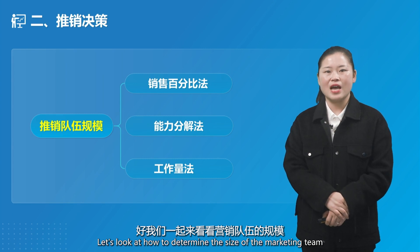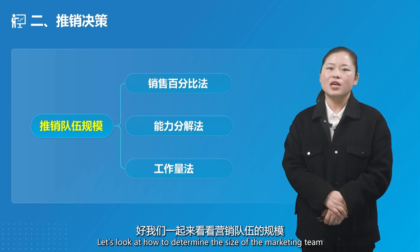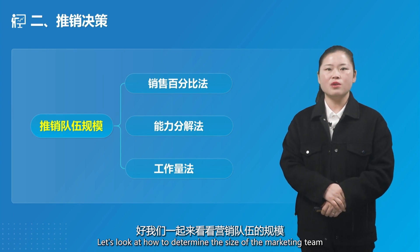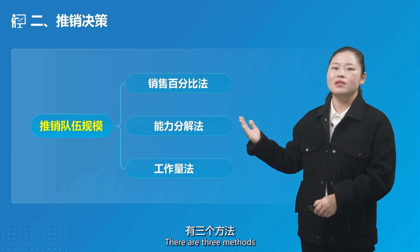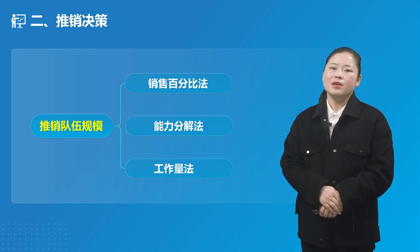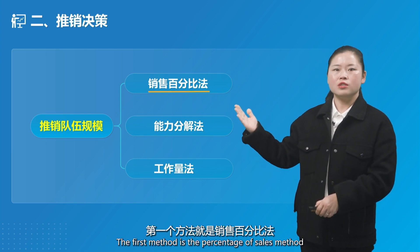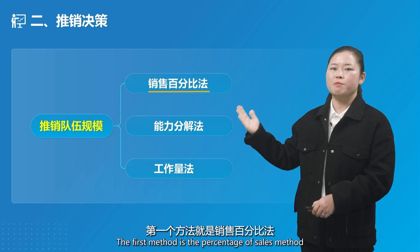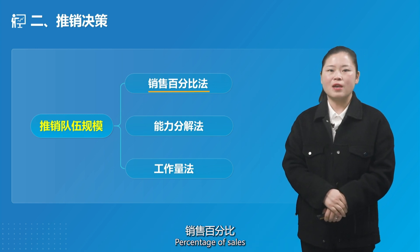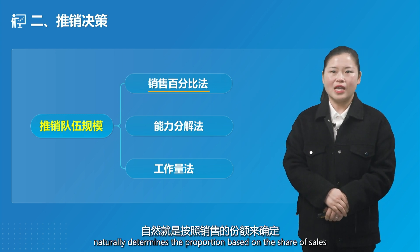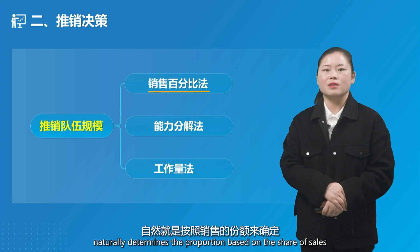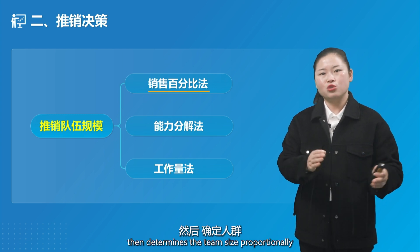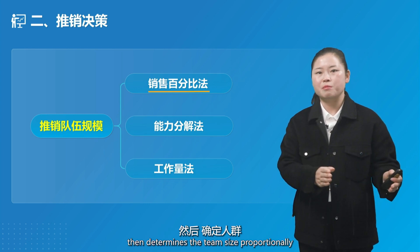Let's look at how to determine the size of the marketing team. There are three methods. The first method is the percentage of sales method, which naturally determines the proportion based on the share of sales, and then determines the team size proportionally.